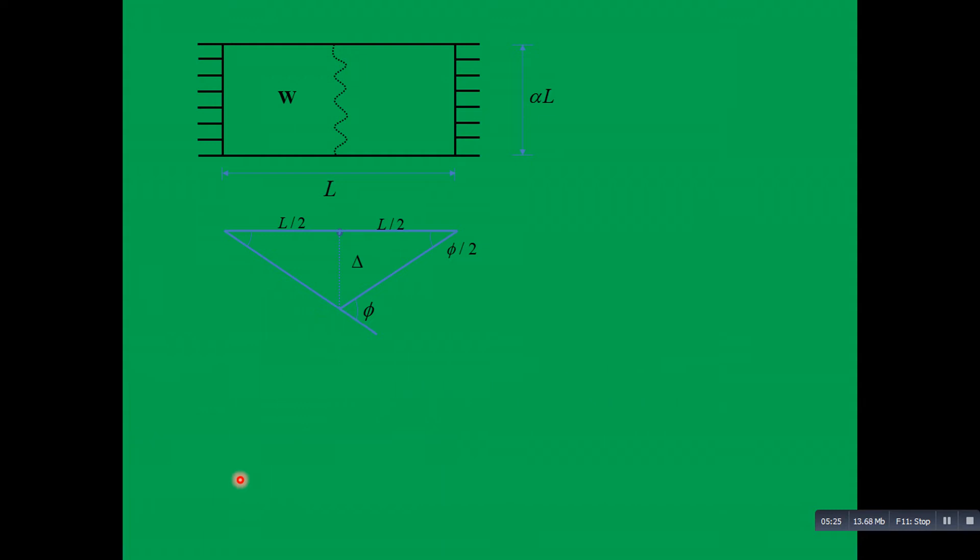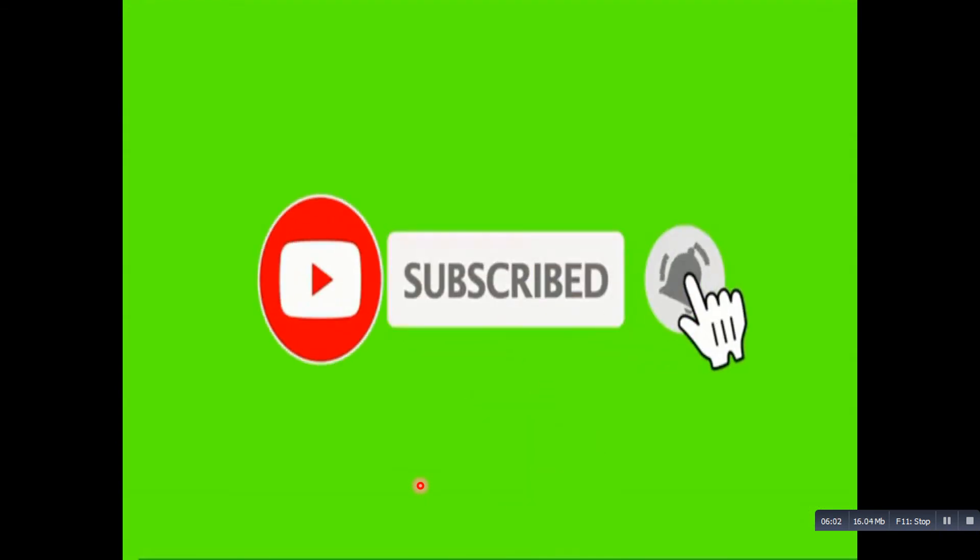So internal energy equals external energy. Reducing the terms, we will solve for the moment. The moment will be W L square over 8. In other terms, M equals W L square over 8 is the failure moment. When the slab reaches a moment capacity of W L square over 8, it will fail. That's it guys. If you find this video helpful, please don't forget to subscribe to this channel. I'll see you in the next video. Thanks.